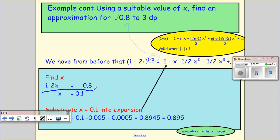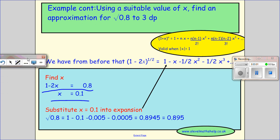I put that like that, and then I work out what x would be and x would be 0.1. I then take my x equals 0.1 and just pop it in the expansion.